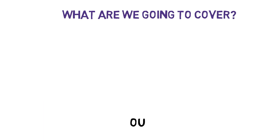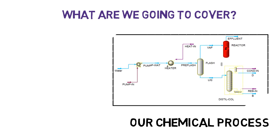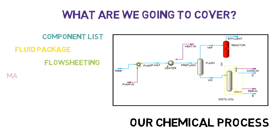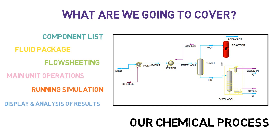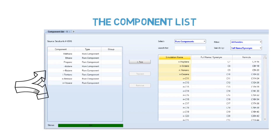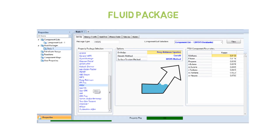So what are we going to cover in this quick course? We're going to see the component list — one of the most important parts — in which we select all the chemical components we're going to use throughout the simulation. We continue with the selection of the fluid package, which is a set of rules on how we're going to model the interactions between substances, such as thermodynamic interactions and transport properties.